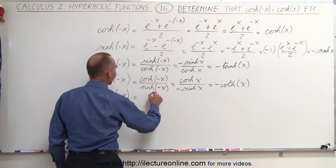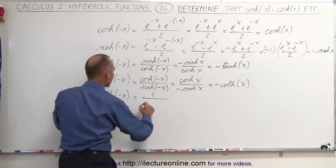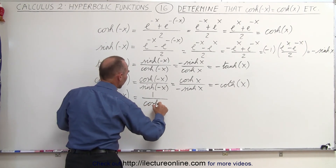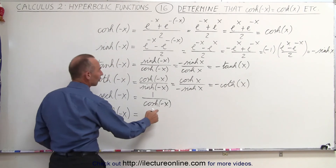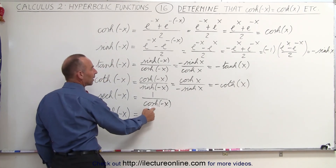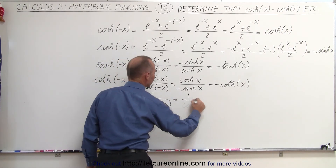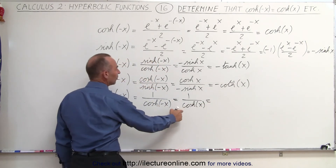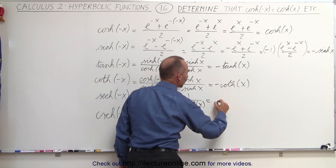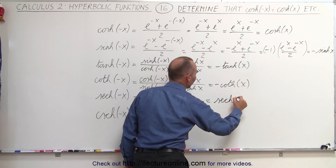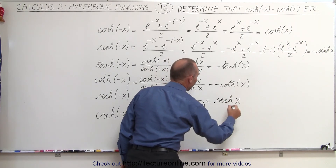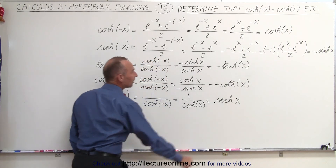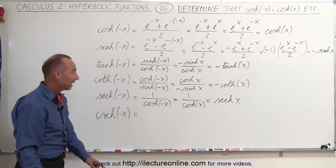For the hyperbolic secant, we know that this is equal to 1 over the hyperbolic cosine of negative x, and of course that can be replaced by simply the hyperbolic cosine of x, which means that this is equal to the hyperbolic secant of x. So the hyperbolic secant of a negative x is equal to the hyperbolic secant of x.